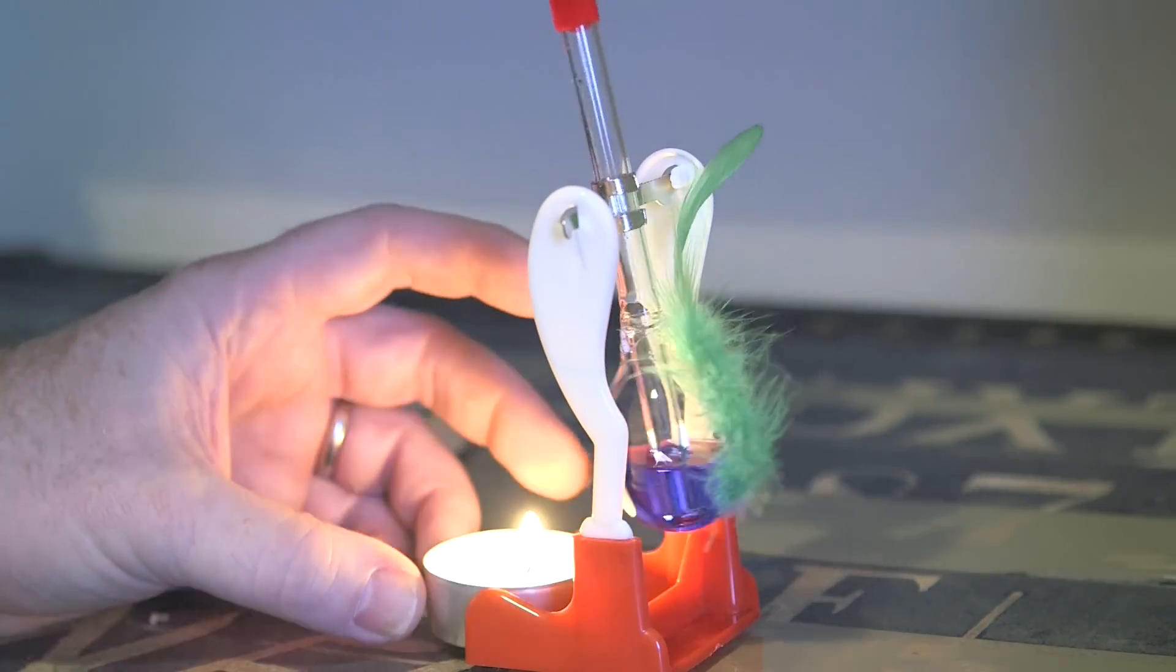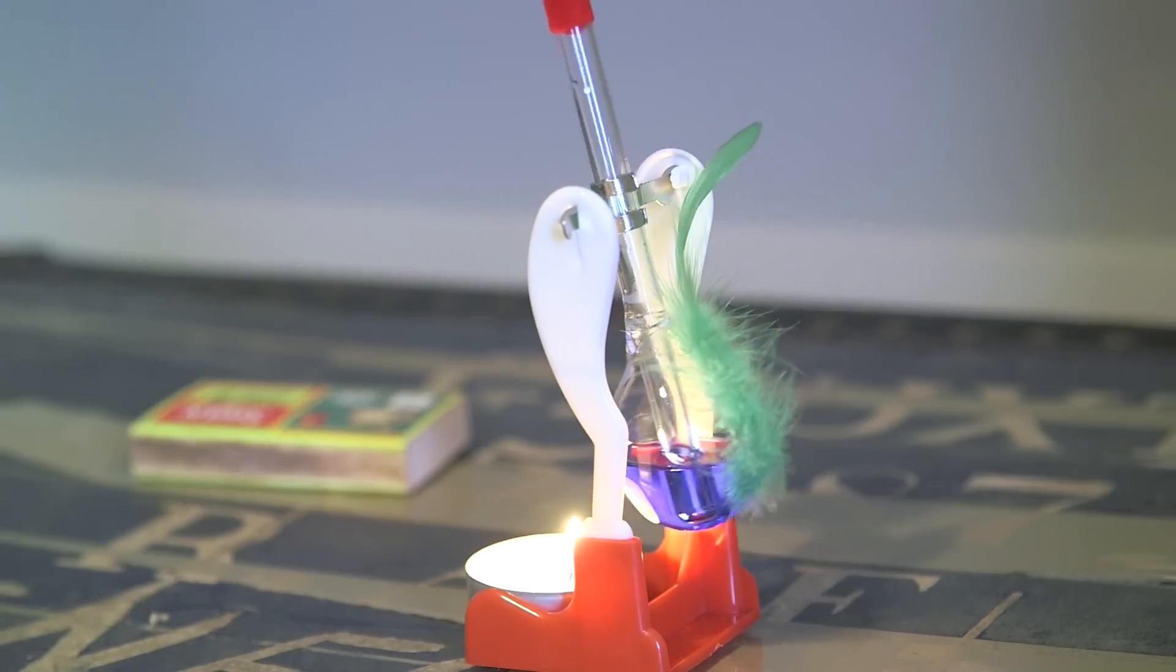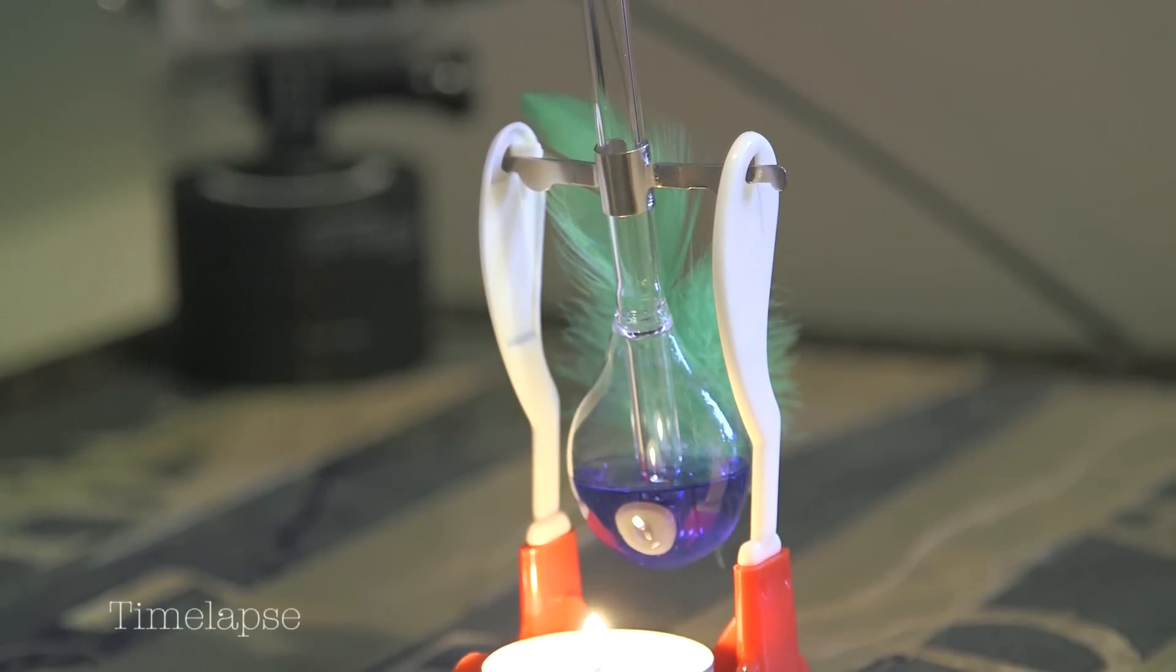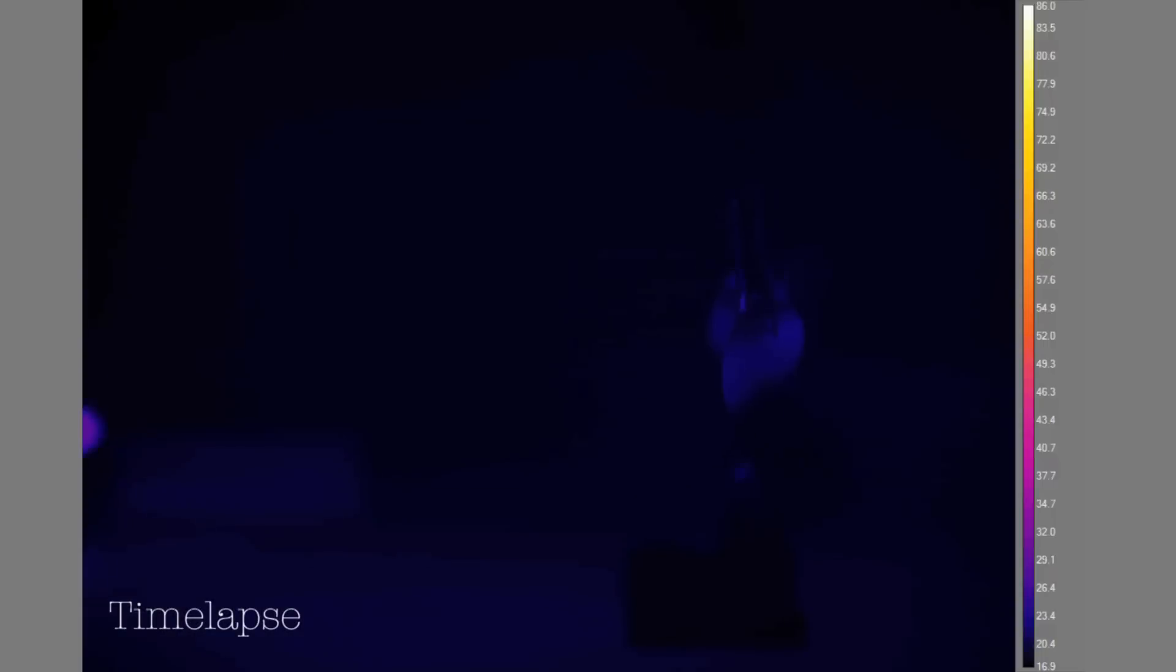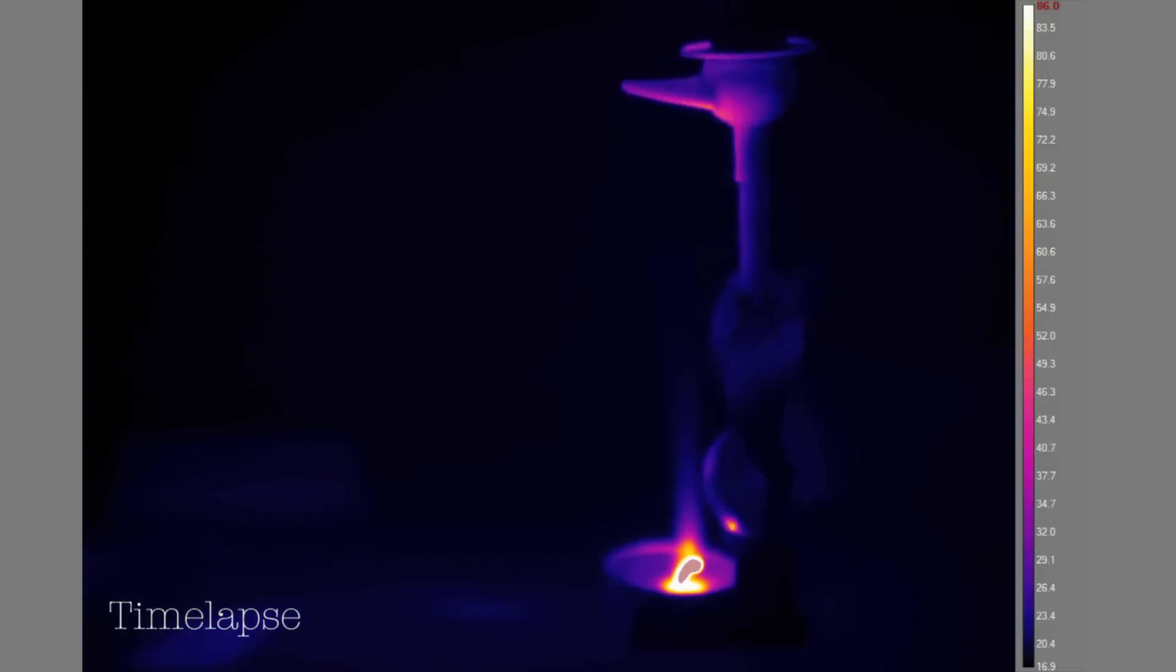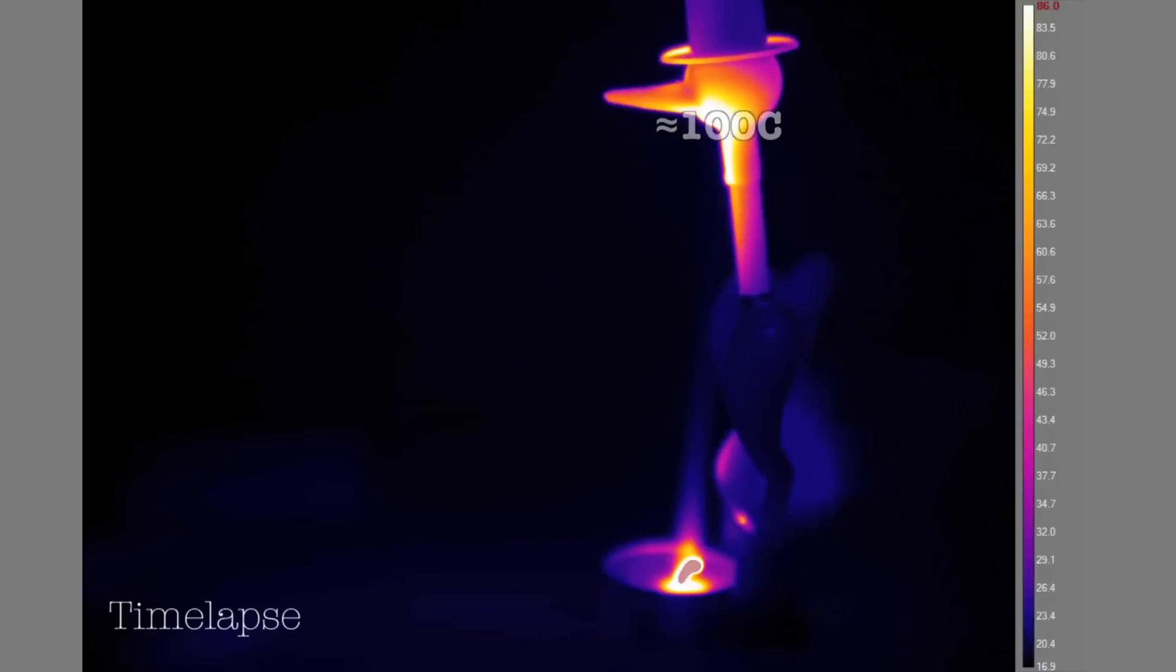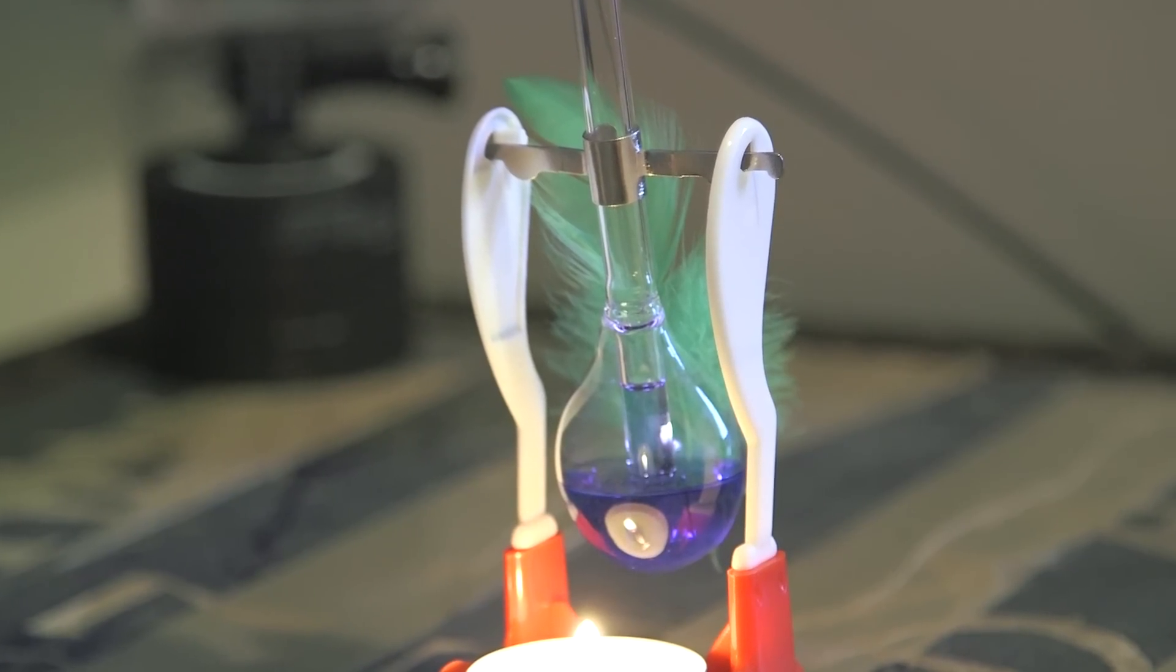So next, I tried putting the tea light here, hoping for a gentler application of heat to that bottom bulb. Just a little bit of liquid creeping up, but never quite enough to tip the bird. And it was thermal imaging that revealed the problem. You can see the tea light is actually applying tremendous heat to the top bulb. The gas pressure up top is increasing, pressing down on the liquid. Exactly what you don't want.